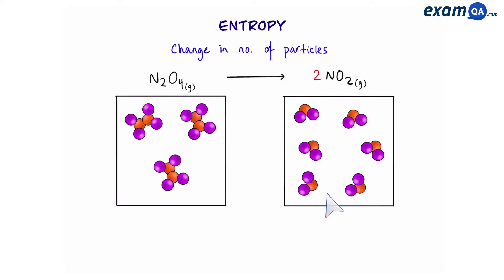There's been no change in state, however on the right we have more particles so there is more disorder or randomness on the right and as a result there is more entropy. So whenever the number of particles increases, that also means that entropy also increases.